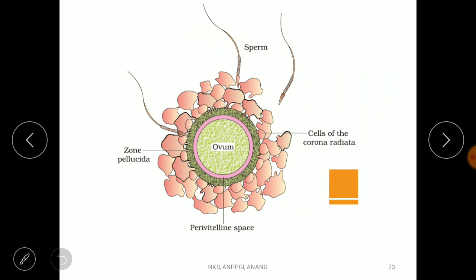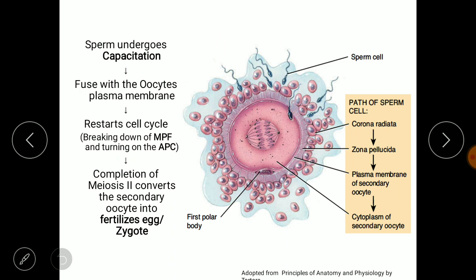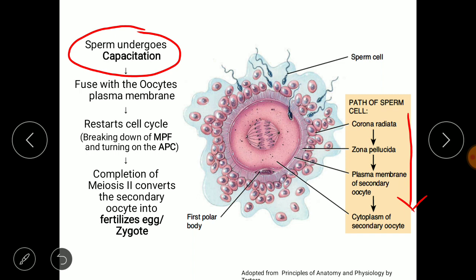Looking at the diagram: first the corona radiata is lysed, then the zona pellucida is degraded, and the pink-colored perivitelline space is where the fertilization membrane forms. Once the sperm is deposited inside the vagina, the sperm also prepare themselves — becoming more activated and increasing their motility to fertilize the ovum as early as possible. This preparation of sperm is called capacitation, and it takes place in the female reproductive tract.